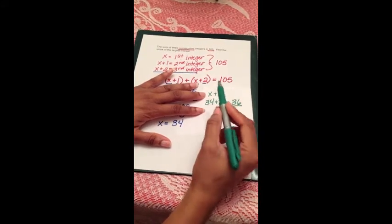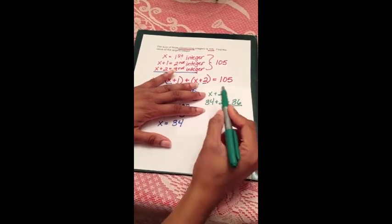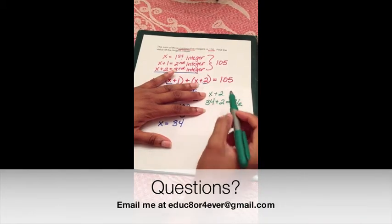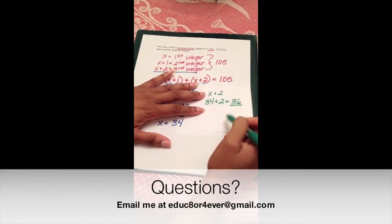So we've solved our problem. We know that the sum of three consecutive integers is 105, and we have found the value of the largest integer.